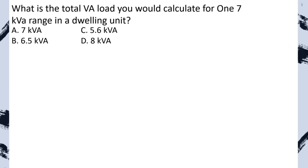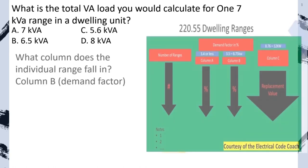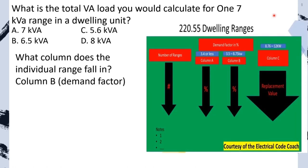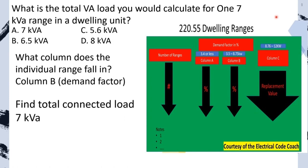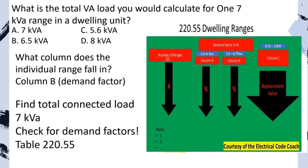Practice problem: What is the total VA load for one 7 KVA range in a dwelling unit? Individual range falls into Column B. Total connected load is just 7 KVA for one range. Check for demand factors: from the table, Column B for one range is 80%. Multiply: 7 KVA multiplied by 0.80 gives our new reduced load. We select C.